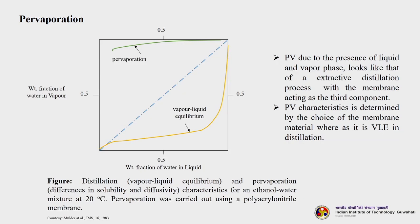Now let us understand the basic difference between distillation and pervaporation. In distillation, the major driving force is vapor-liquid equilibrium. In pervaporation, differences in diffusivity and solubility play a big role, and the material of the membrane plays a big role. Pervaporation, due to the presence of liquid and vapor phase, looks like extractive distillation, where in extractive distillation we put a third solvent or entrainer. In pervaporation, the third component is nothing but the membrane itself, and the pervaporation characteristics are determined by the choice of membrane material.